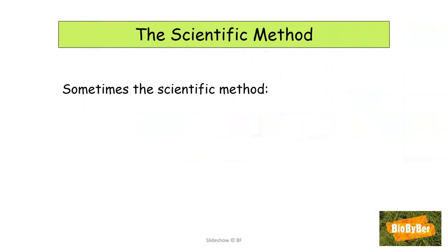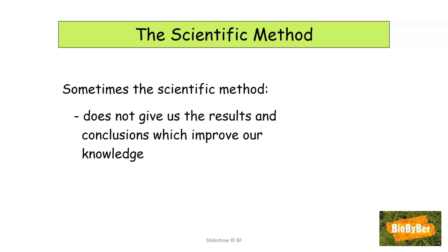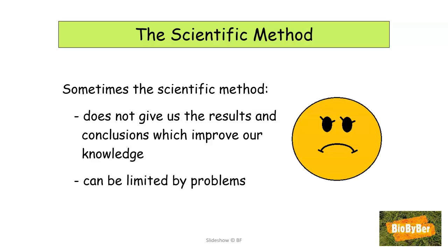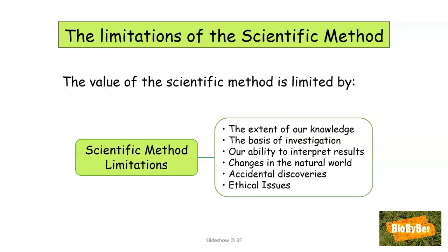Sometimes the scientific method does not give us results and conclusions which improve our knowledge. The value of the scientific method is limited — it cannot be used in all circumstances and is not always a perfect process. It can be limited by problems. The value of the scientific method is limited by the following points: the extent of our knowledge, the basis of investigation, and down through the list to ethical issues.